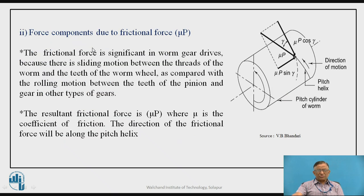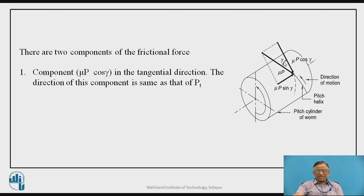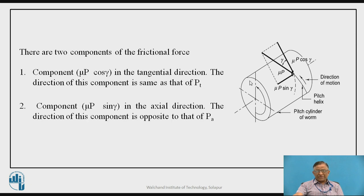The second component is due to frictional force μP, which acts tangent to the helix due to sliding friction. It is resolved into two components: μP cos γ in the tangential direction (same direction as PT from normal reaction) and μP sin γ in the axial direction (opposite to PA from normal reaction).